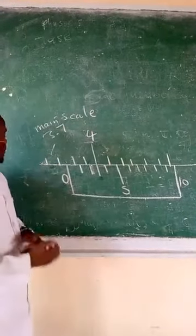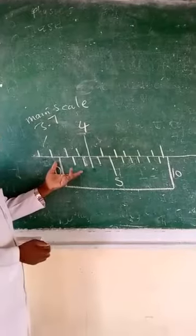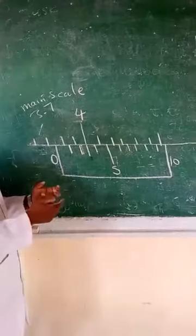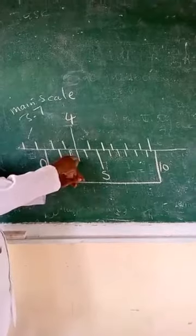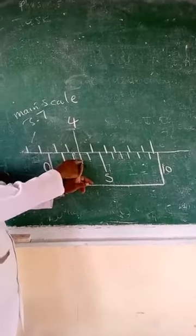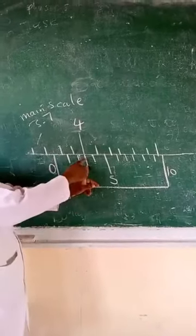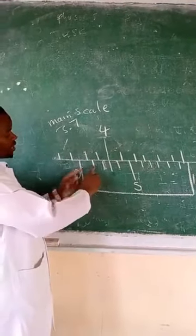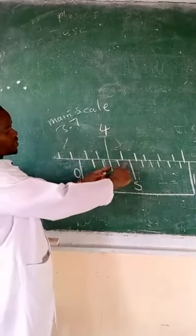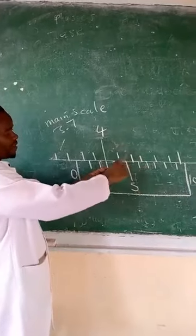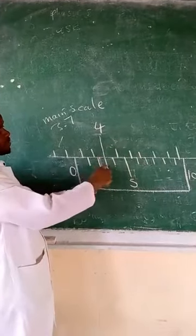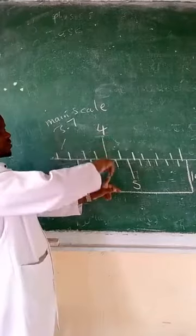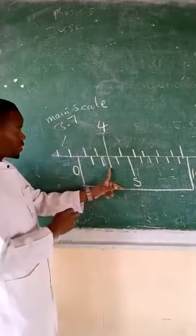The second step is you have to pick the reading on the vernier scale, and it should be the mark on the vernier scale which coincides with the mark on the main scale. So now we check, none of them is actually coinciding with any other mark on the other scale except this one. So this one and that one coincide, hence we're going to pick this one as the reading on the vernier scale.